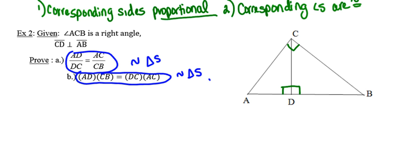You might be asking yourself, how do I know which triangles to prove similar? Because if I look over here at the picture they've given us, there are actually three triangles in that picture — there's a big one and two smaller ones. The way we determine which triangles to use is by looking at the proportion or the sides being multiplied together. We've got side AD, and I can already tell this is going to be one of our triangles because the only triangle that side AD is a part of is that red triangle.